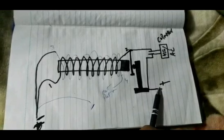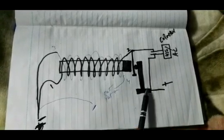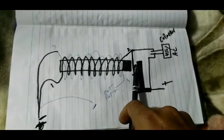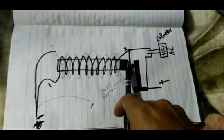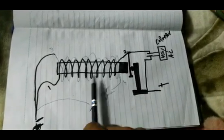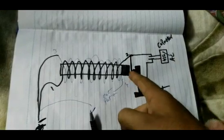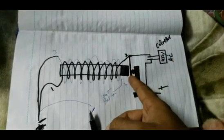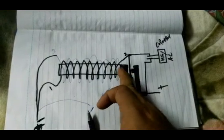When we put power, 12 volts here, the current will go through here, and the coil will make a magnetic field. It will pull the metal and the current will be stopped.